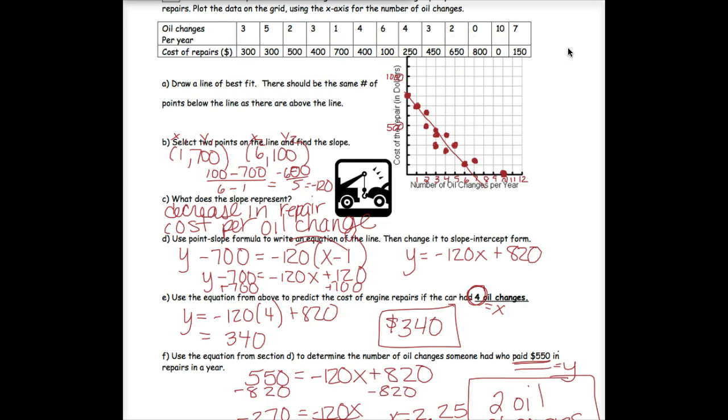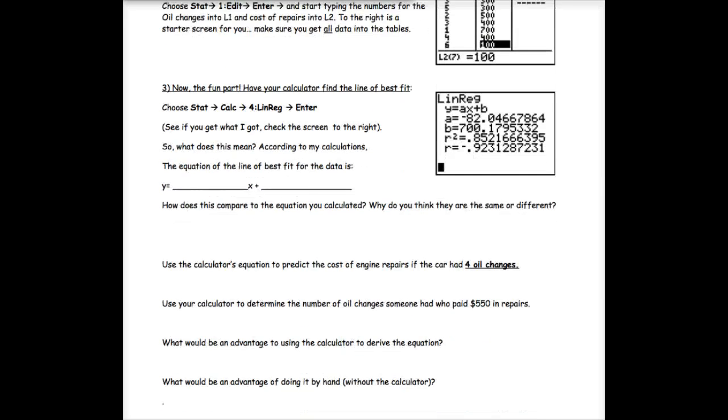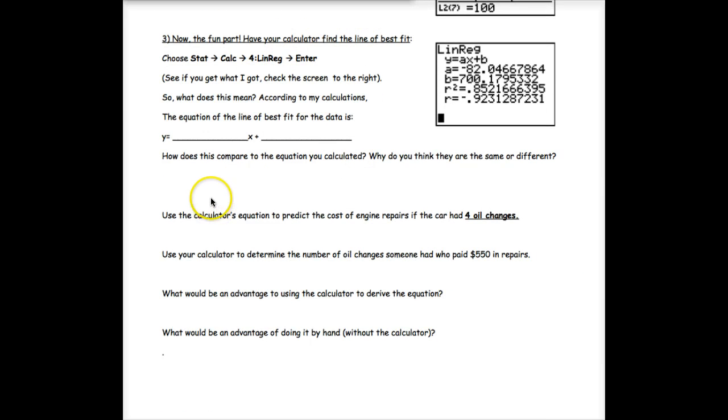Hit 300, enter, 300, enter, and keep going. It might be helpful to cross off as you go to make sure you don't double enter a value or something like that. Because usually when people get the wrong answer, it's because they entered the data incorrectly. So when you finish, hopefully, it lines up so that the 7 is with the 150. If not, go back and fix your data. You've got to get all the data in the tables.